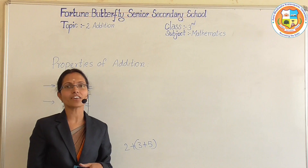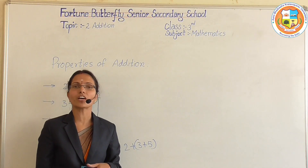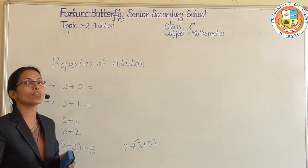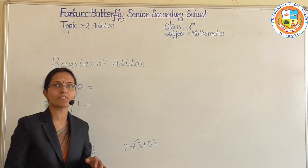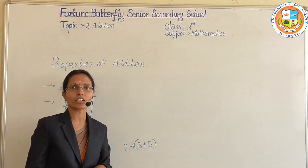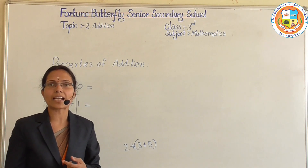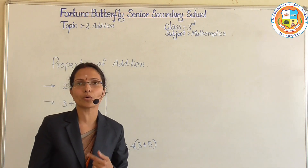Now, properties of addition. What are those properties? In addition, 4 properties are there. The first property is adding with 0.